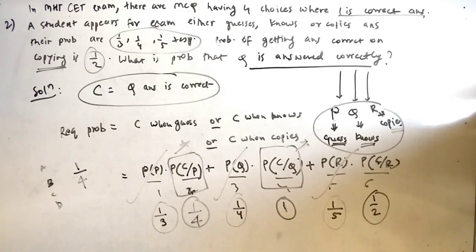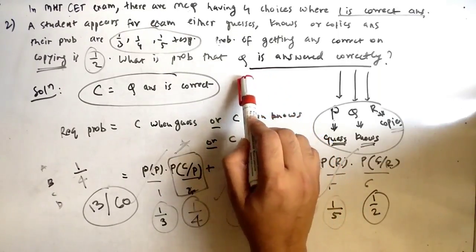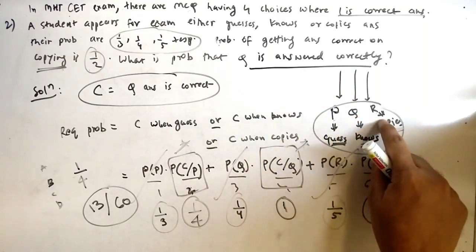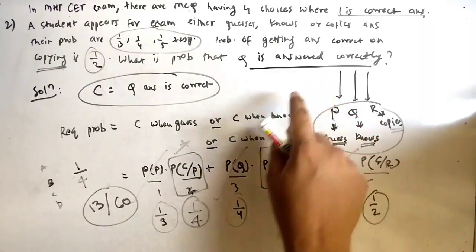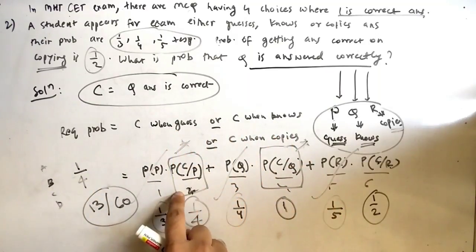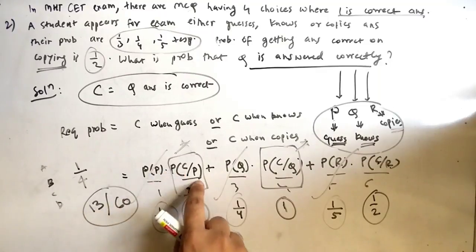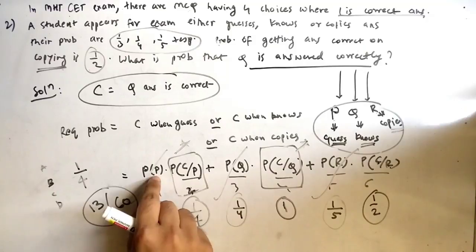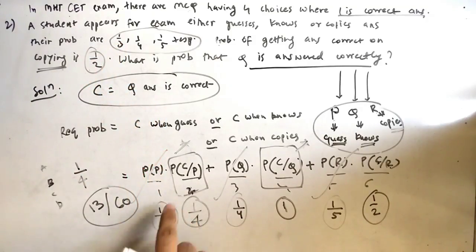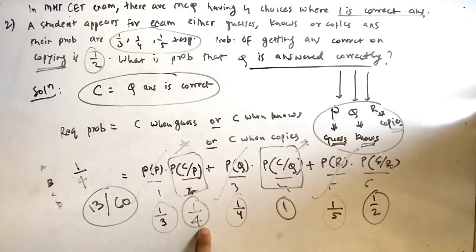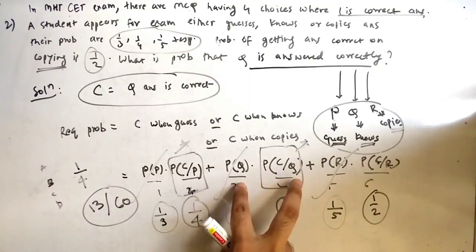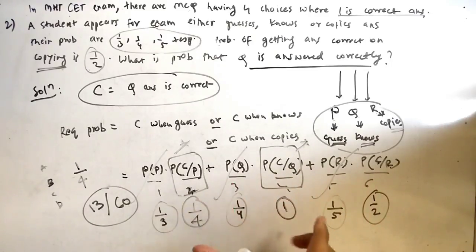Now plug in all the values and the answer is 13/16. To recap: the question answered correctly has three conditions — he guesses and correct, he knows and correct, or he copies and correct. We convert to probability form, use logic to find P(C|P) = 1/4 and P(C|Q) = 1, add everything up, and get 13/16.